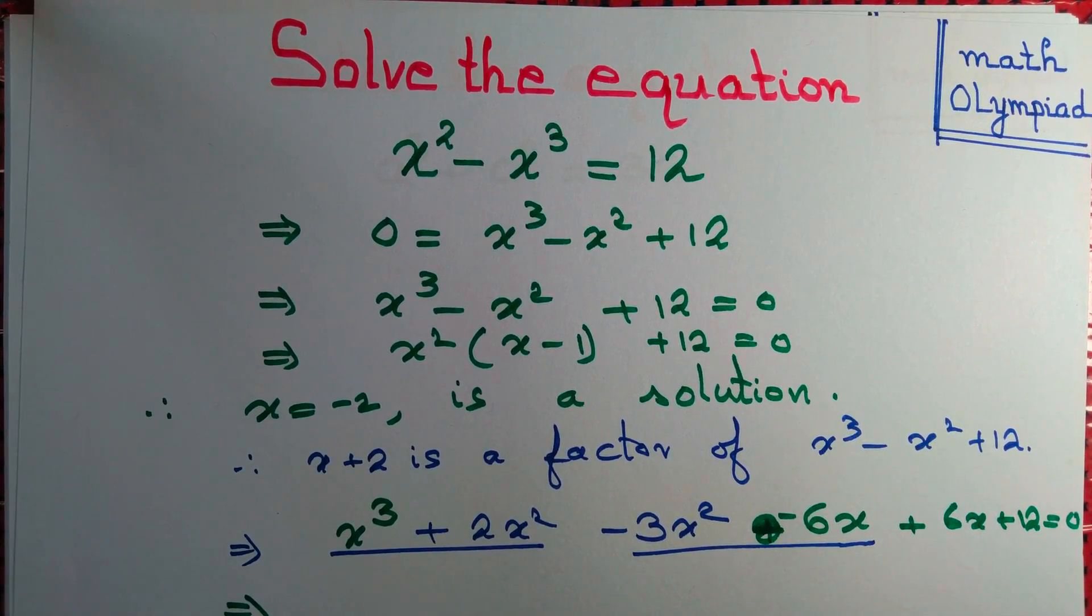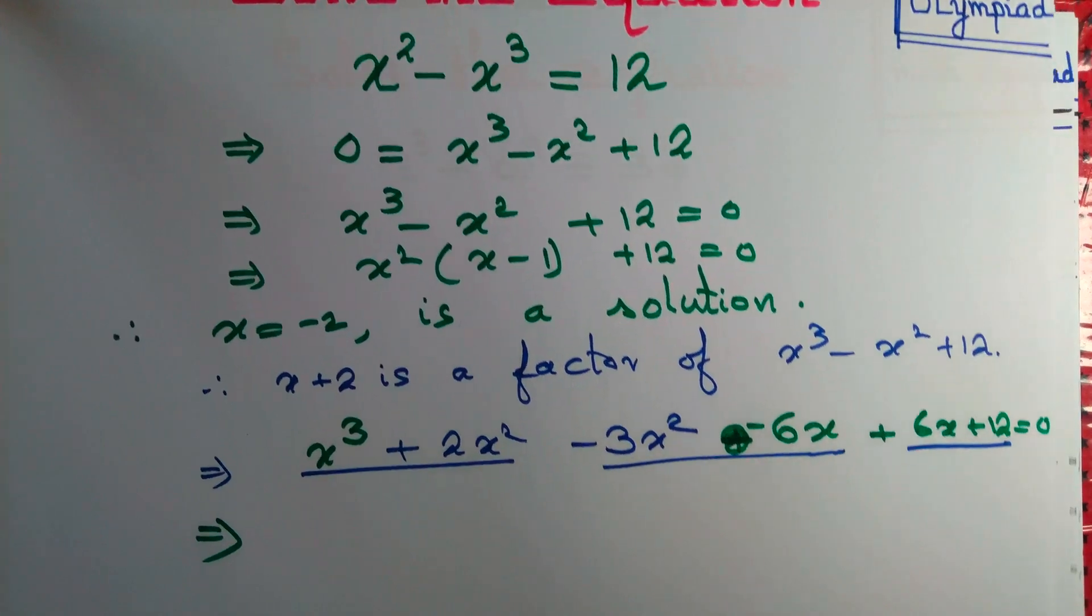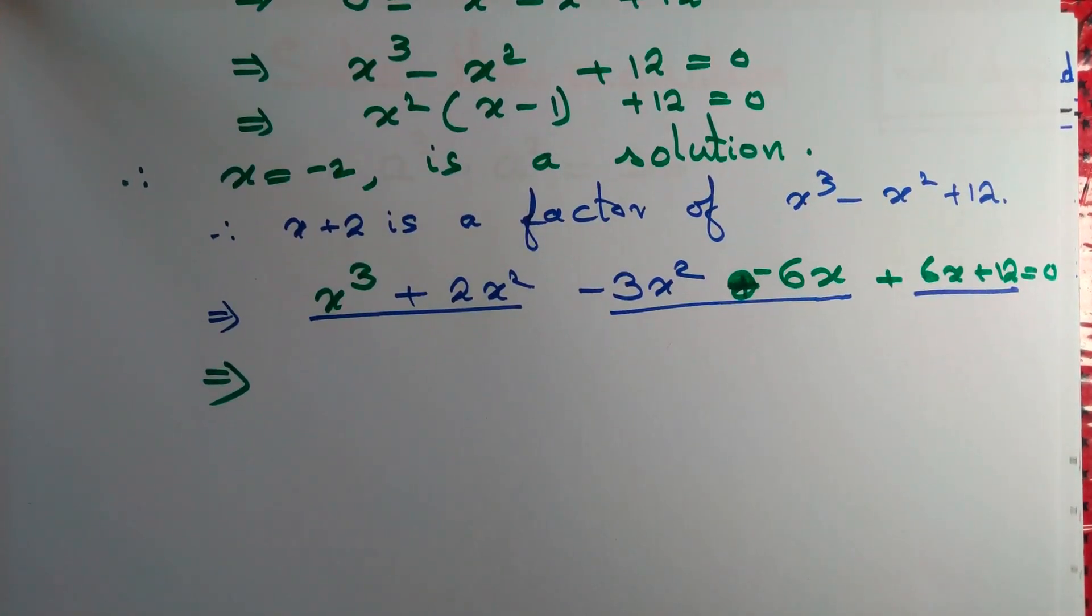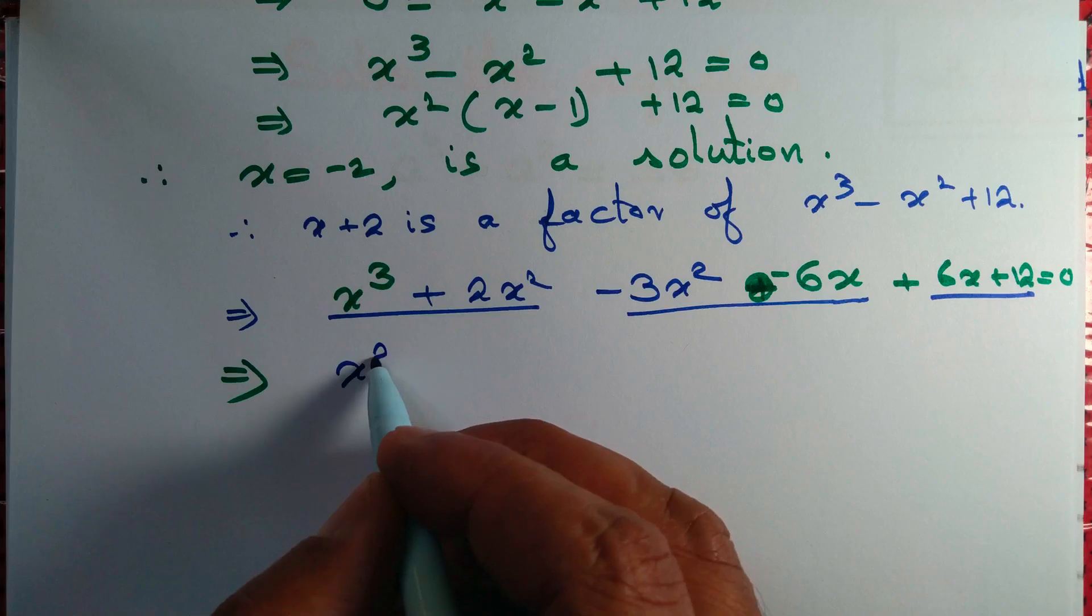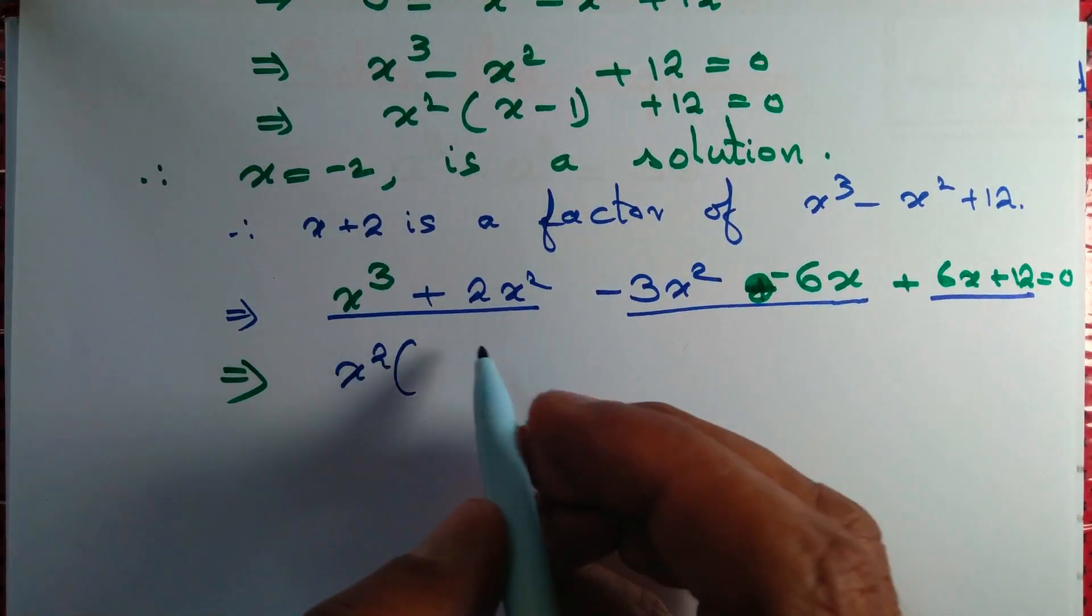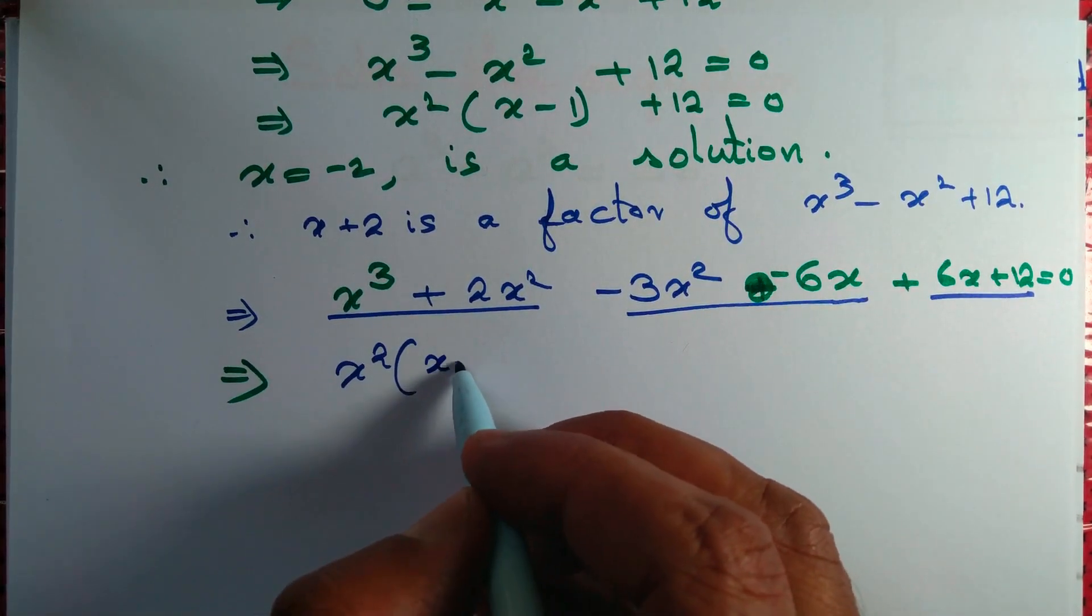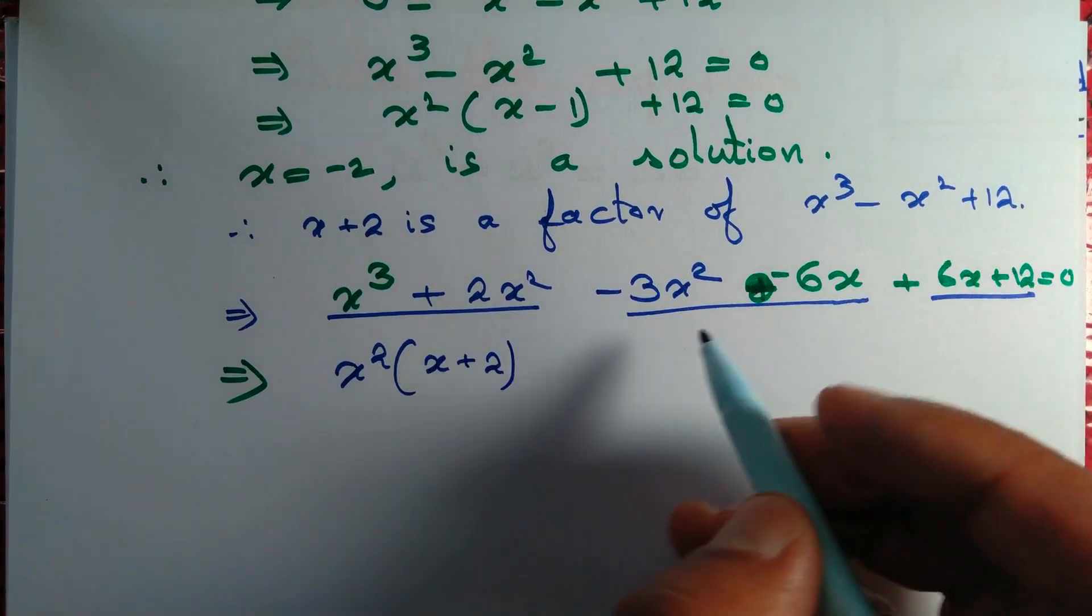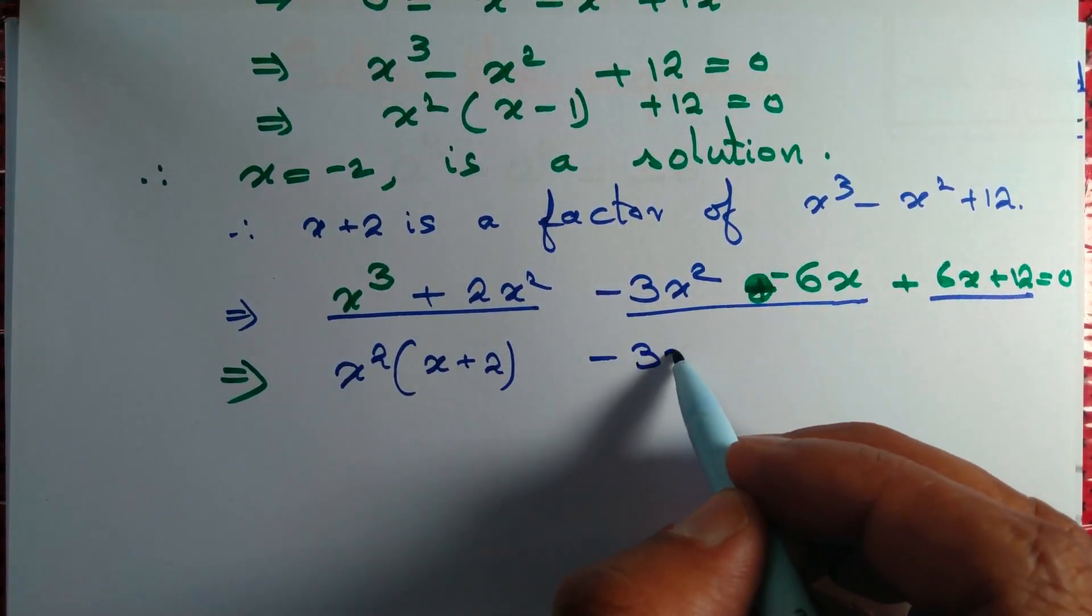Now let's take x plus 2 common from each of these three expressions. So we obtain x square common. First step, we take x square common. We get x plus 2 here. We take minus 3x common. Again, we get x plus 2.